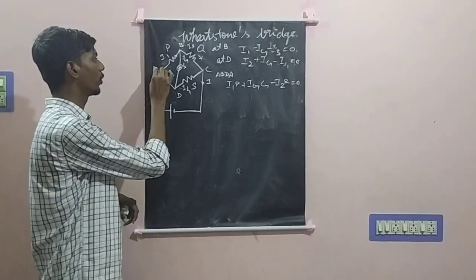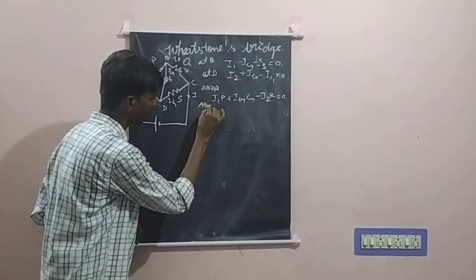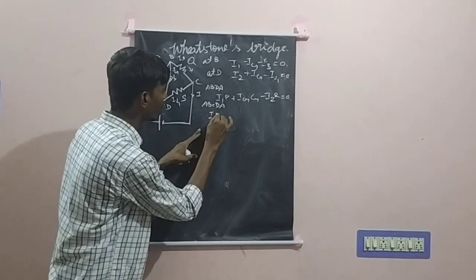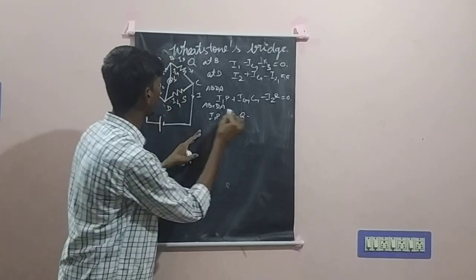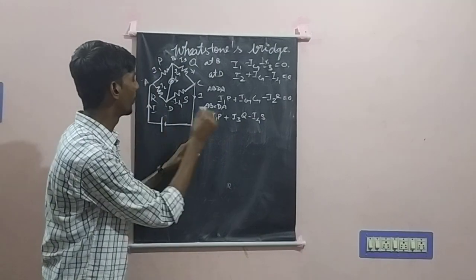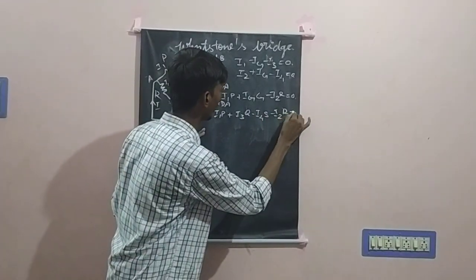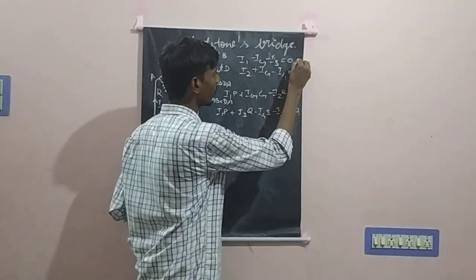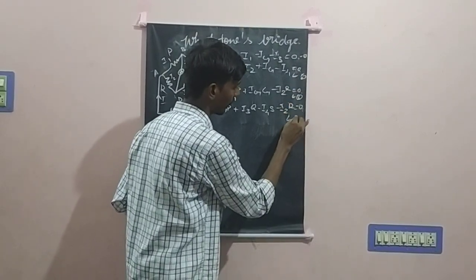Considering loop ABCDA and applying the voltage law, we get: I1P plus I3Q minus I4S minus I2R equals 0. Let us name these equations 1, 2, 3, and 4 respectively.